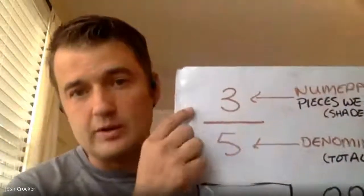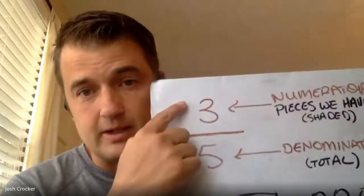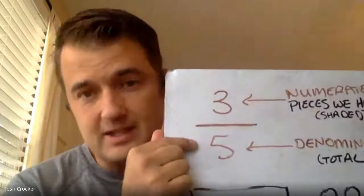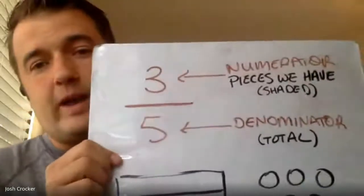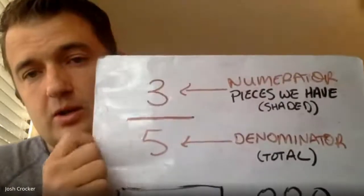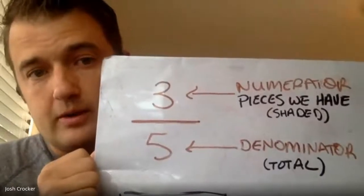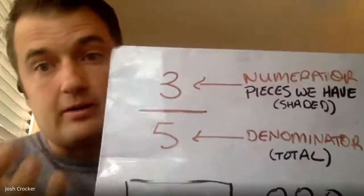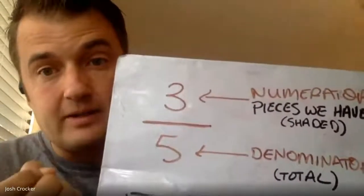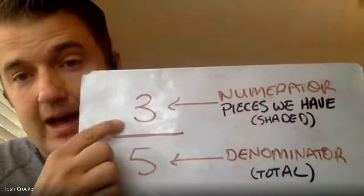Today we're going to start with just what a numerator is, a denominator, and what all of those words can mean. So when you see a fraction like this fraction, we would call this fraction three-fifths — three and then fifths because it's referring to pieces. We have two numbers here. The top number is always called the numerator, and the numerator tells us how many pieces there are, how many we have. So in this fraction, we have three pieces.